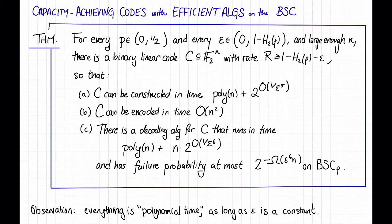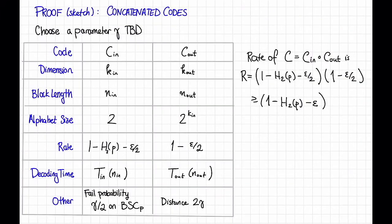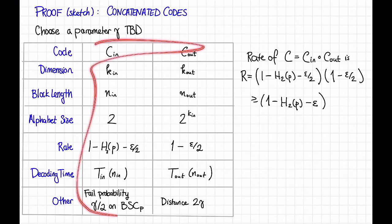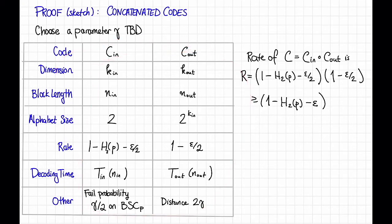To verify, just multiply everything out — you'll get the main terms and some lower-order terms that happen to go in the right direction. So this is great — this is what we wanted from the rate. Let's go back to the theorem statement and put a check there that we're going to get the right rate, assuming we can instantiate everything else. Check.